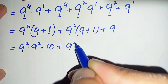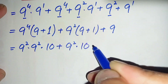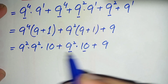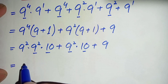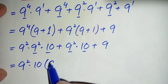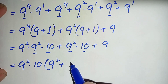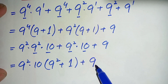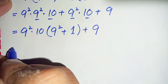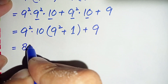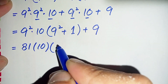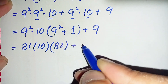We now have 9 squared times 10, plus 9 squared times 10, plus 9. In the next step, we take 9 to the power 2 and 10 common from these two terms. After taking 9 to the power 2 times 10 common, only 1 is left inside the bracket, plus 9. Next we substitute the value of 9 squared, which is 81. So it becomes 81 times 10 times (81 plus 1), plus 9, giving 81 times 10 times 82, plus 9.